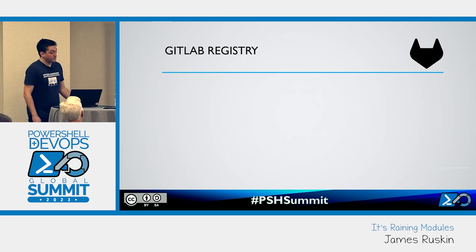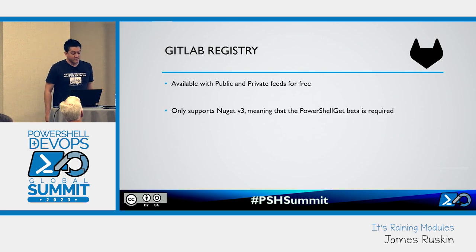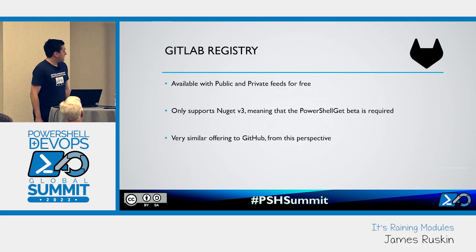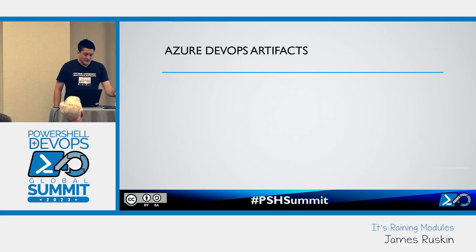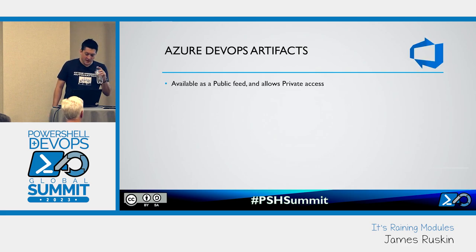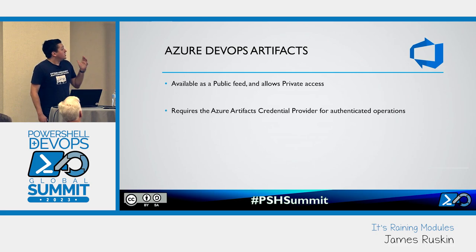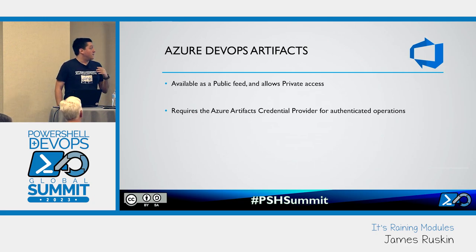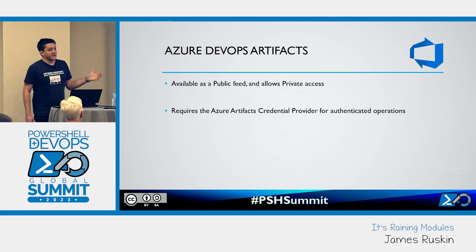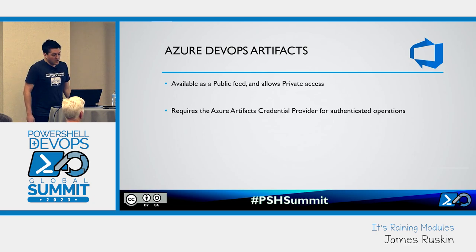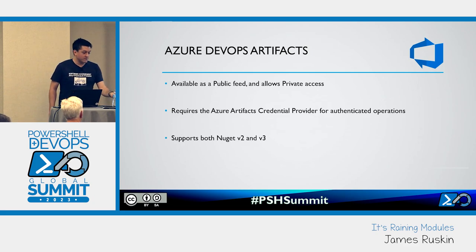GitLab offers a very similar proposition — available with public and private feeds, but it's got a few issues that were the original motivation for me putting this talk together. You require an Azure Artifacts credential provider to do any advanced operations; for example, if you want to push to the feed or install and upgrade, you'll need to install an additional tool to do so. It does, however, support NuGet v2 and v3.